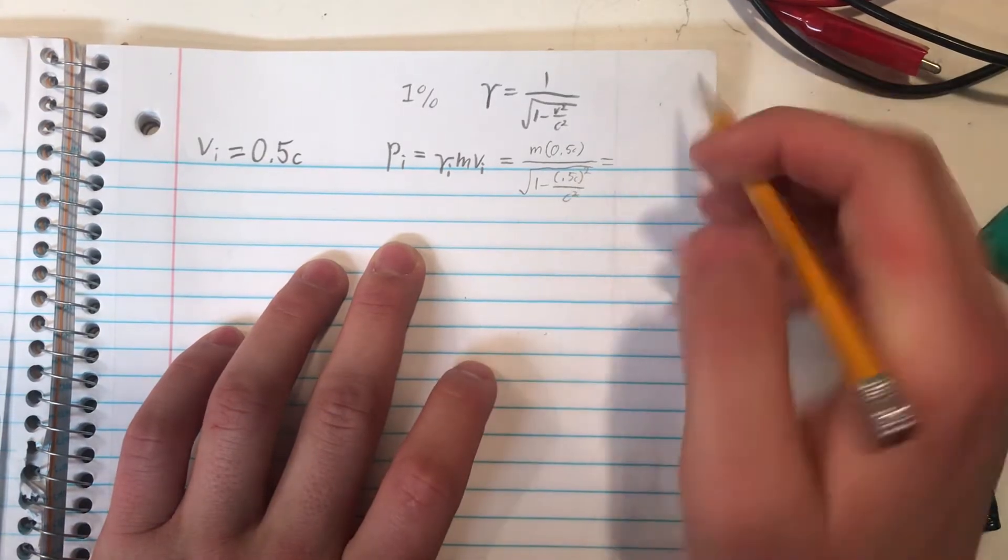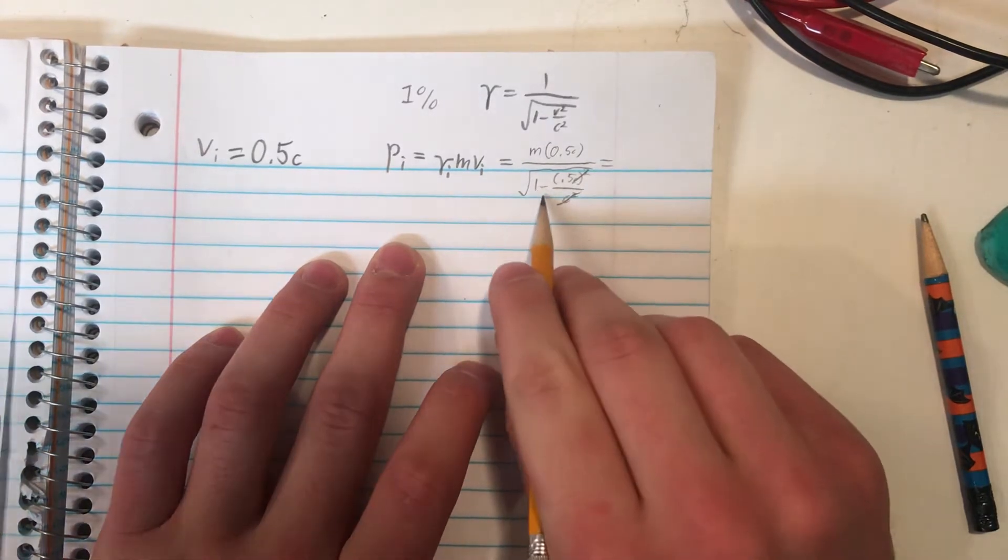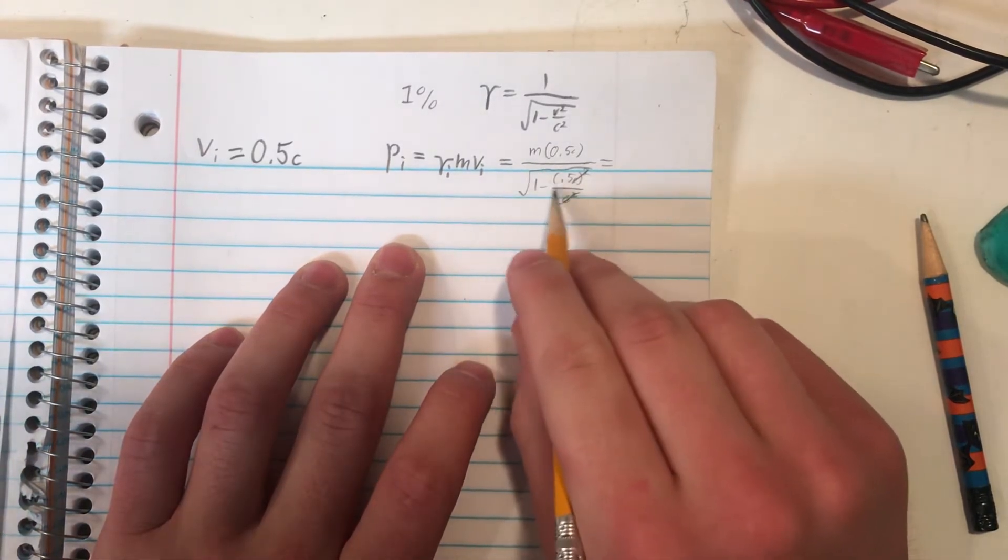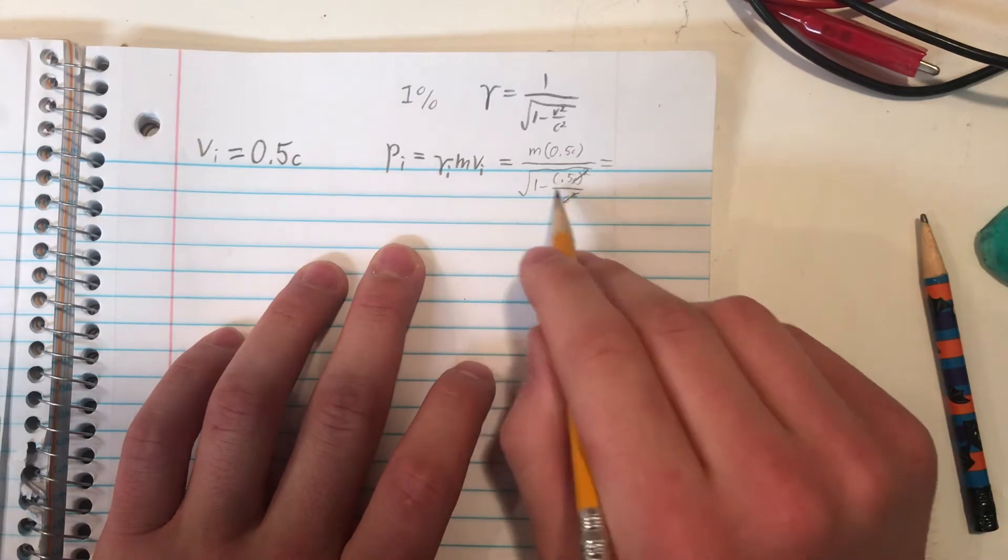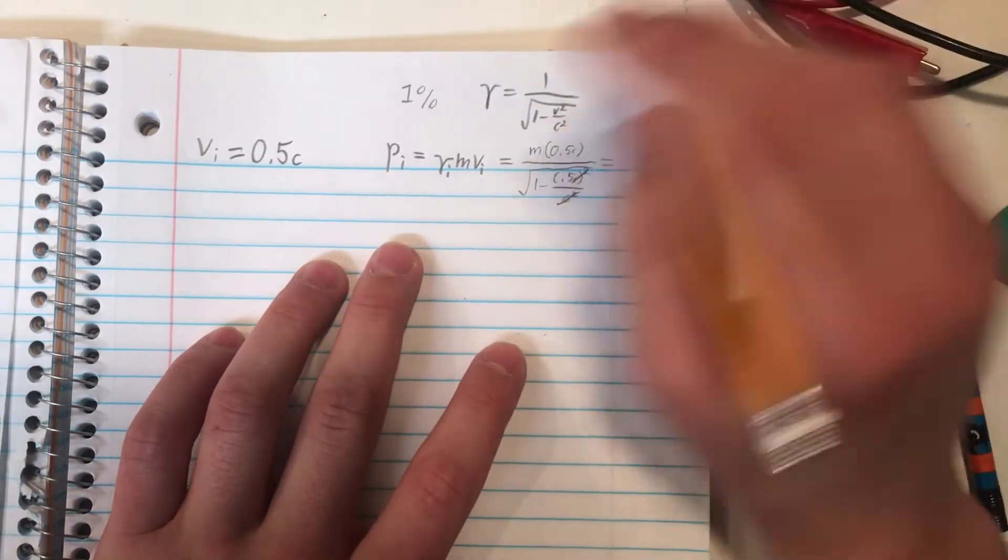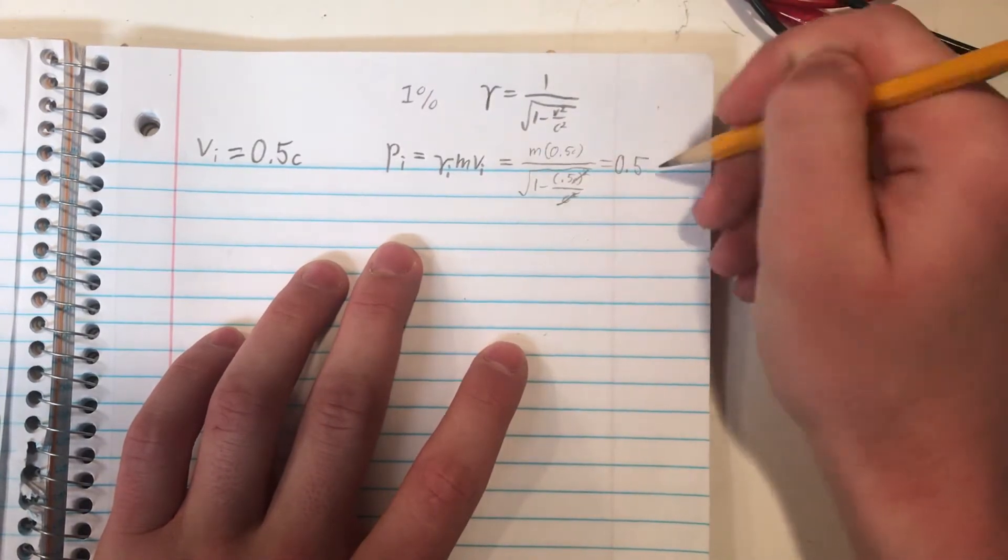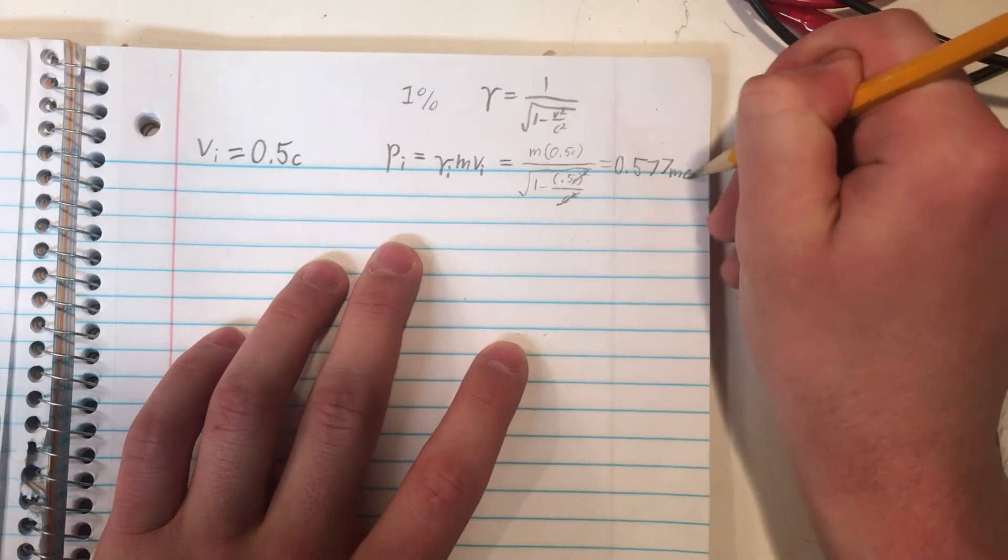So notice that in the denominator here, these two c squareds will cancel out. So the denominator really just gives us the square root of 1 minus 0.5, so just the square root of 0.5. Either way, plug this into your calculator, and you find this approximates roughly to 0.577 times mc.